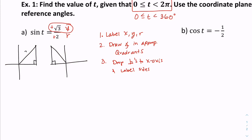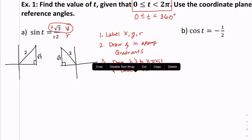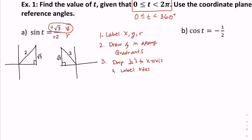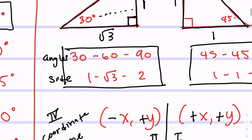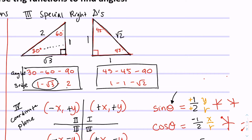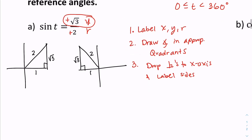Label the sides. My r is 2, and my y is radical 3, both positive. The missing side is 1, because I recognize this as a 30-60-90 triangle. Be careful — for the second quadrant angle, that missing x-side should be negative 1 because it's going backwards to the left.